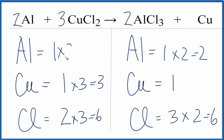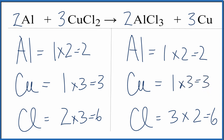1 times 2 equals 2. For the copper, I need 3, so I'll just put a 3 right here. 1 times 3 equals 3. And that's it — we've balanced this equation. This is Dr. B with the balanced equation for Al plus CuCl₂ yields AlCl₃ plus Cu. Thanks for watching.